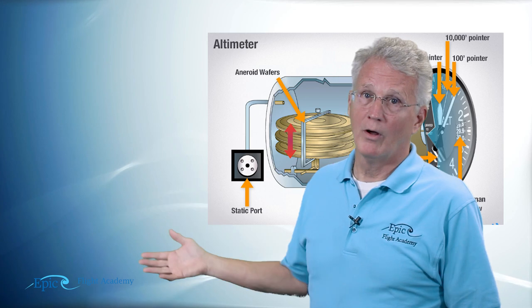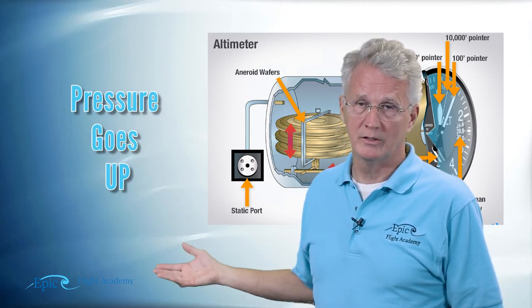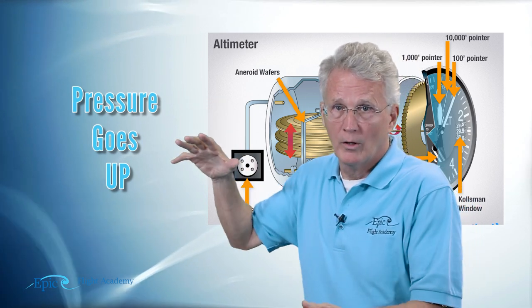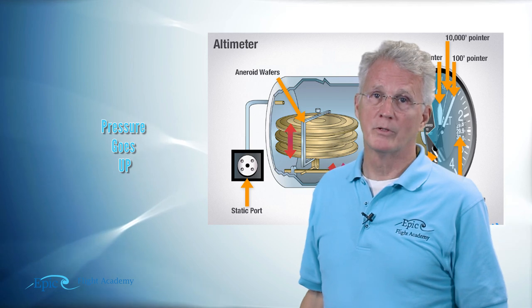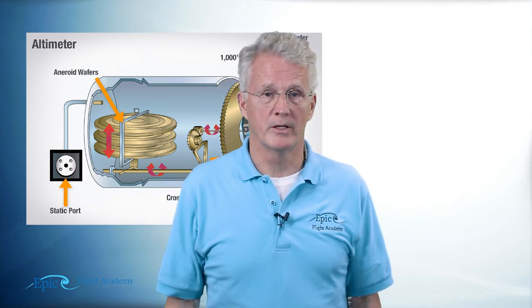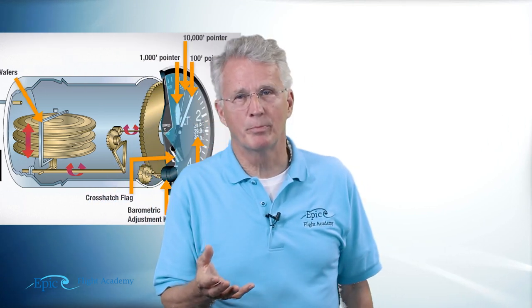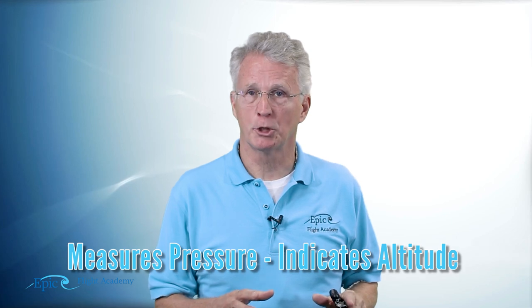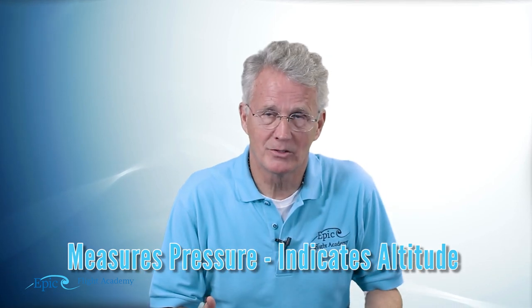When those wafers expand, it moves a series of levers and gears and moves the three indicators on the face of the altimeter. By the same token, if your aircraft descends, higher pressure air comes through the static line into the case, compressing those three aneroid wafers, and it moves the linkages and positions the three hands on the face of the instrument. In essence, it's a pretty simple operation. The altimeter is really a barometer — it measures air pressure.